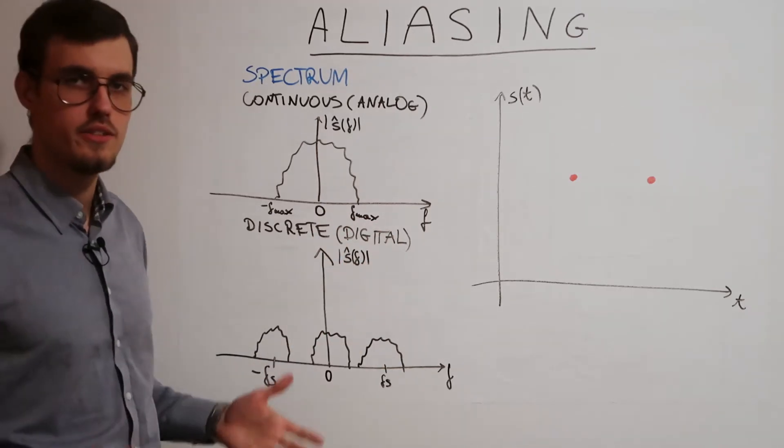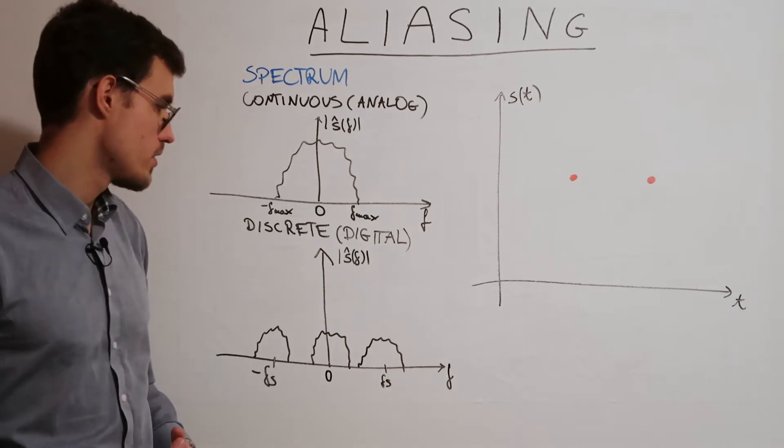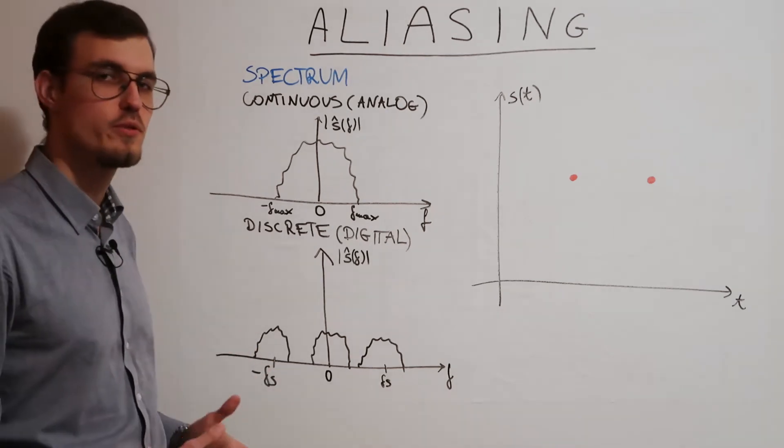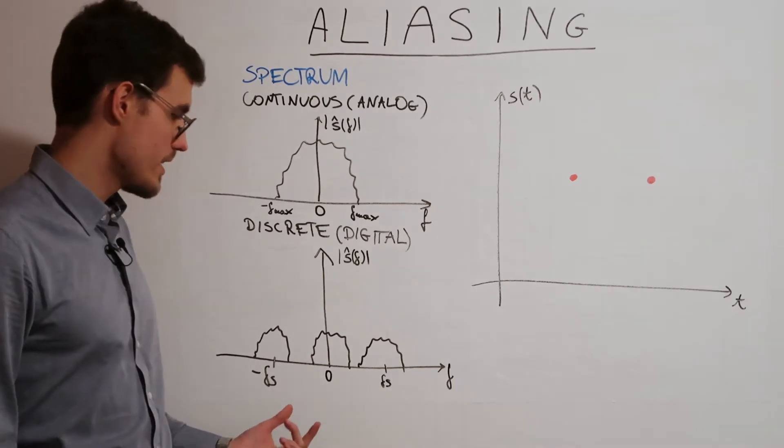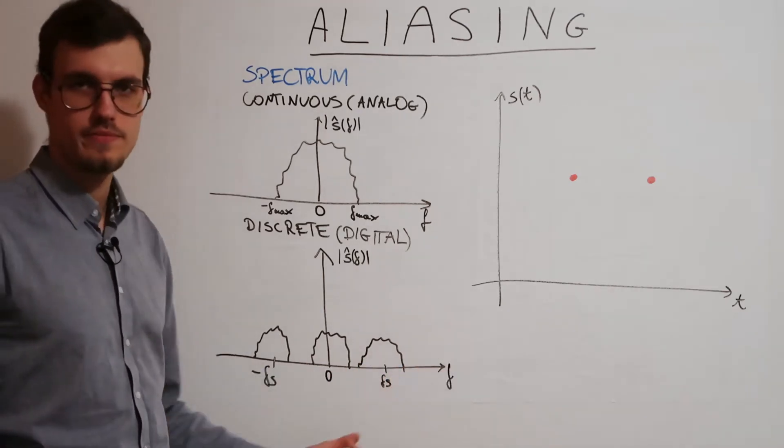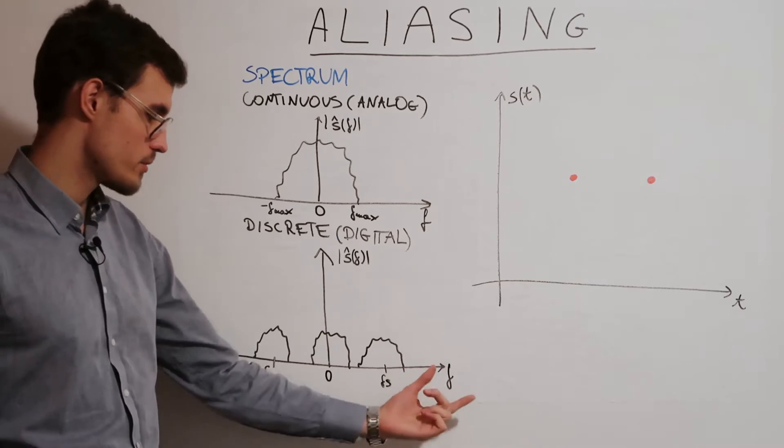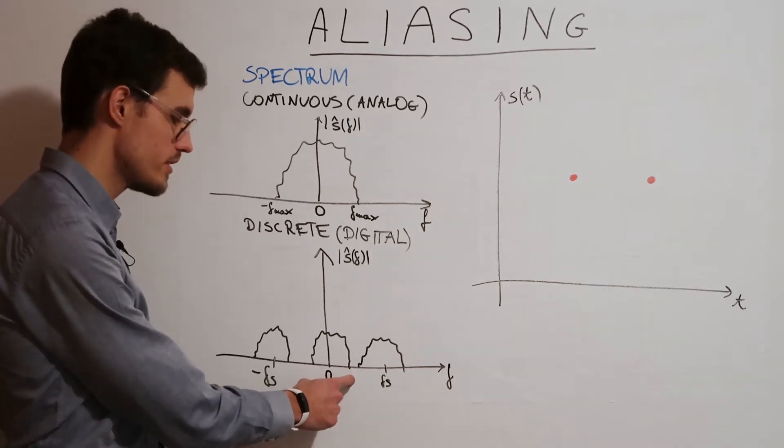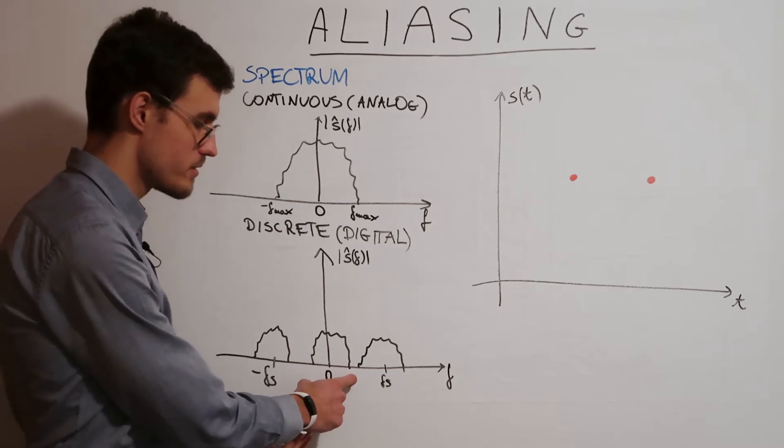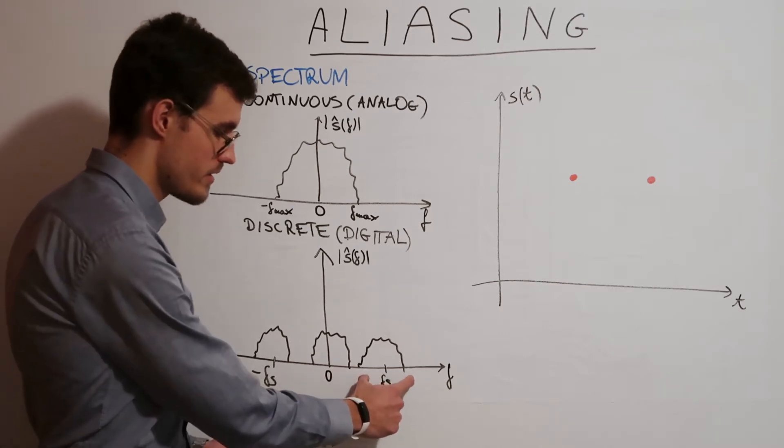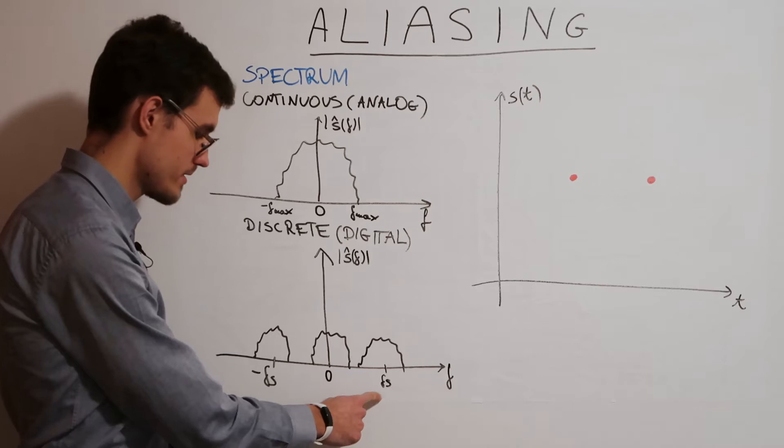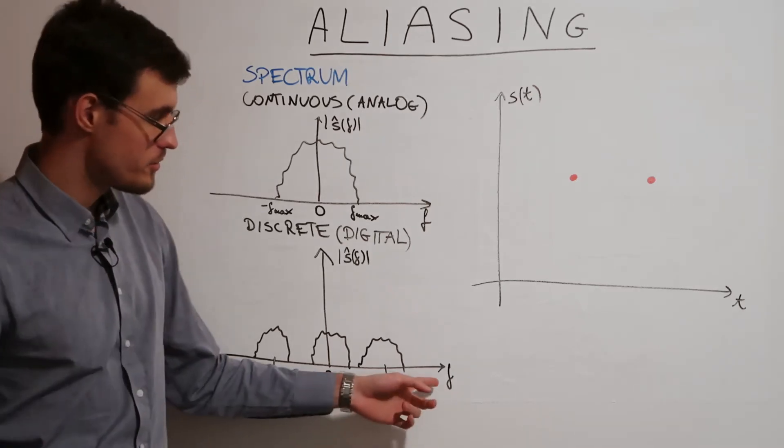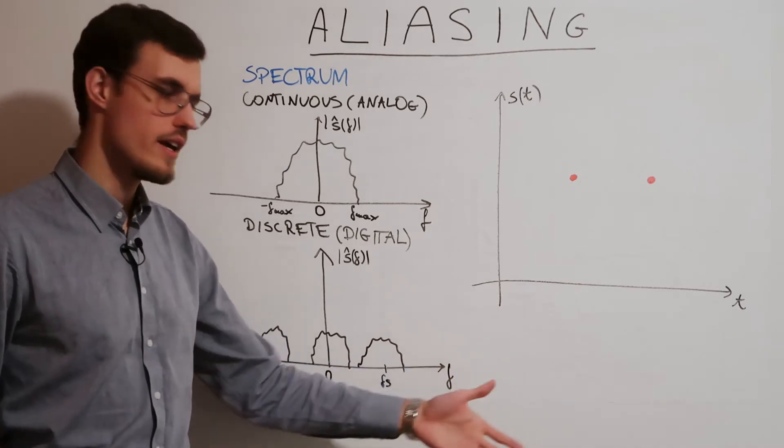When we go to the digital domain, we get, after computing the discrete Fourier transform, a replicated spectrum every sample rate. So we have our original spectrum over here. But the same spectrum is duplicated with the center at fs and at the center of minus fs and at 2fs, 3fs and so on.